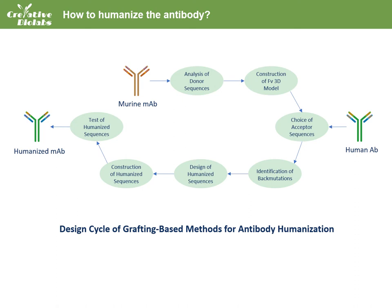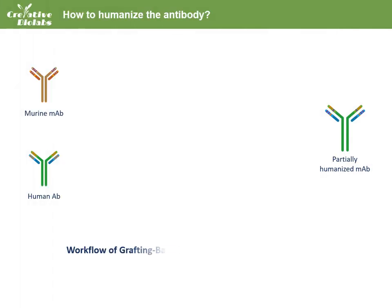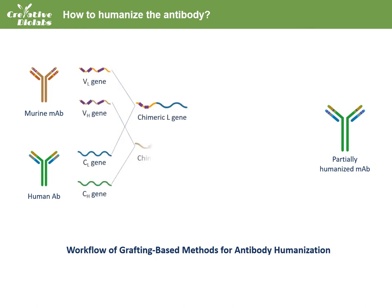Humanized light chain can be tested independently by combining with heavy chimeric chain and vice versa. To produce a humanized monoclonal antibody with the grafting method, the genes of the CDR, SDR, and/or FR within the variable regions of the heavy and light chains of mouse monoclonal antibody are cloned with genes of the constant regions of the heavy and light chains of human antibody to generate chimeric heavy and light chain genes.